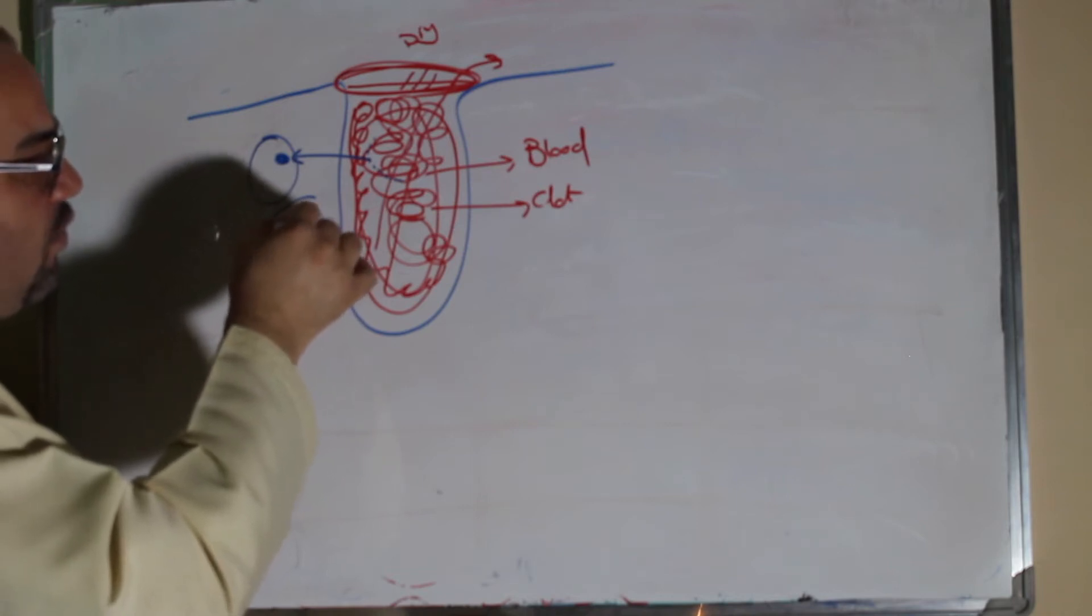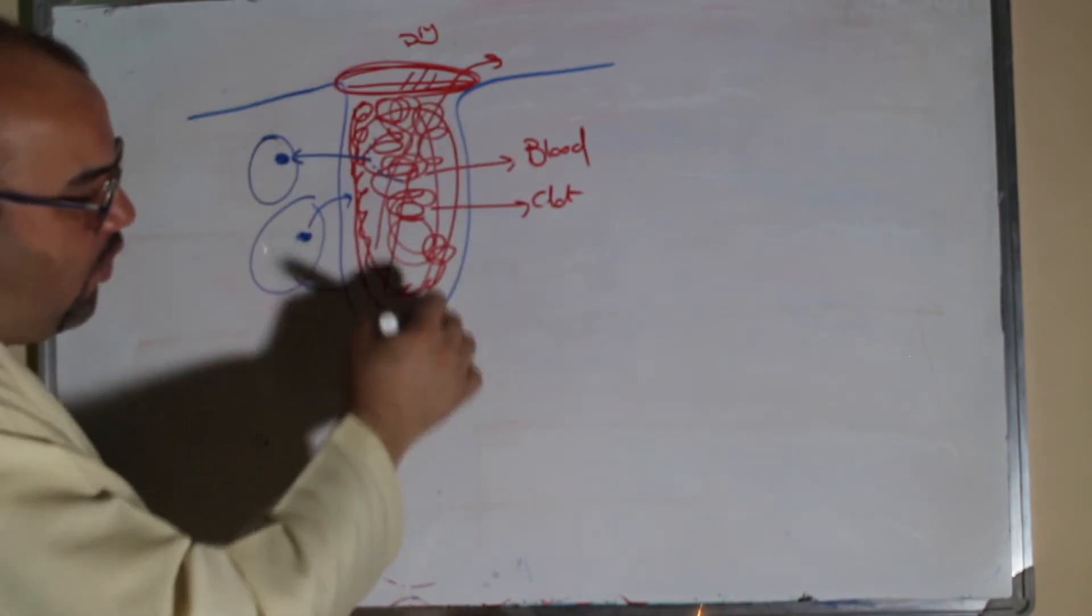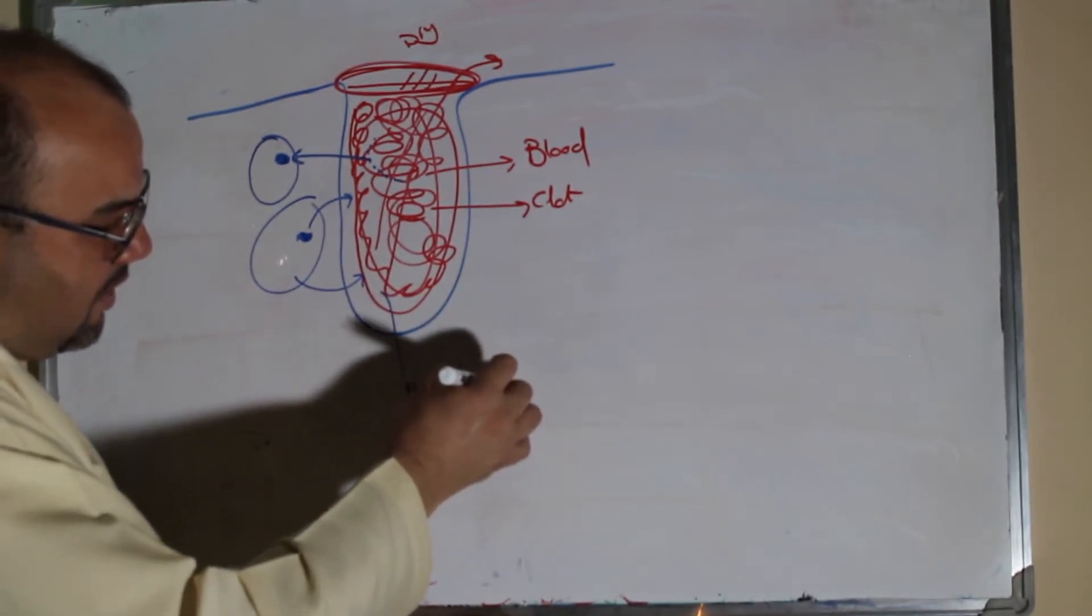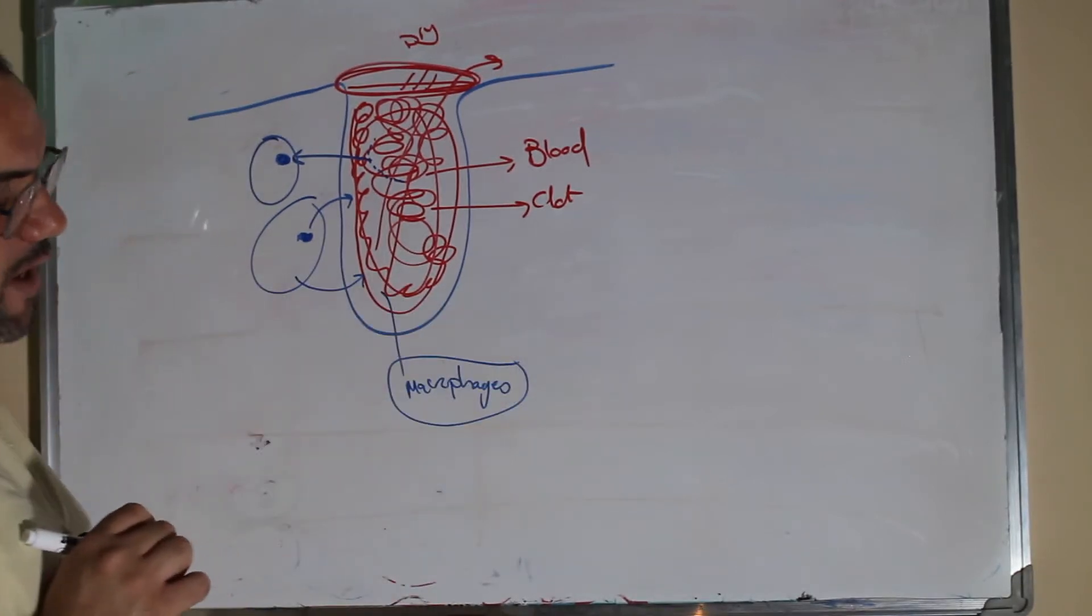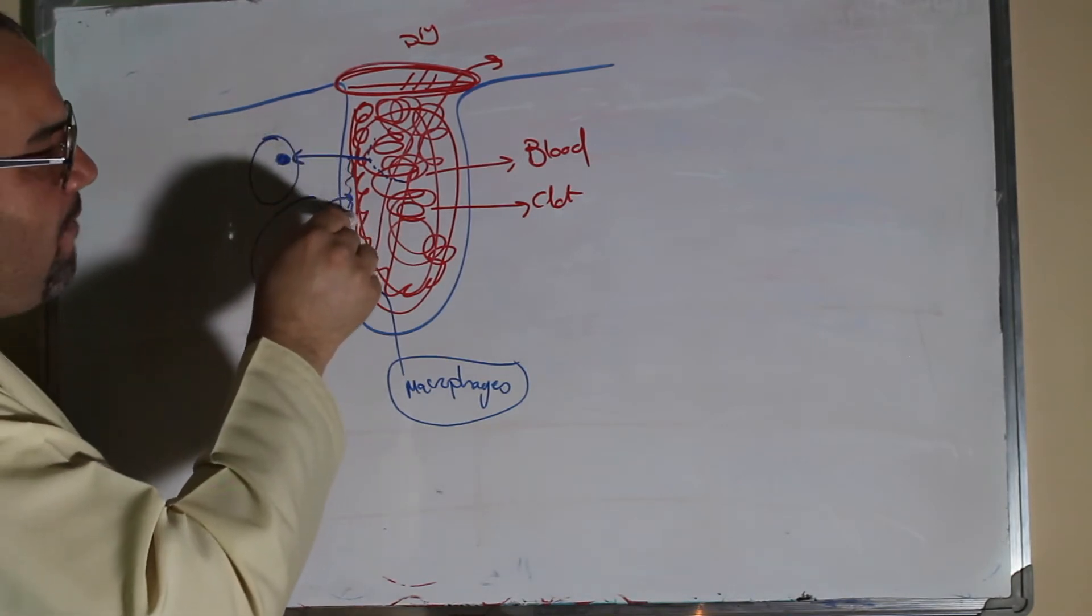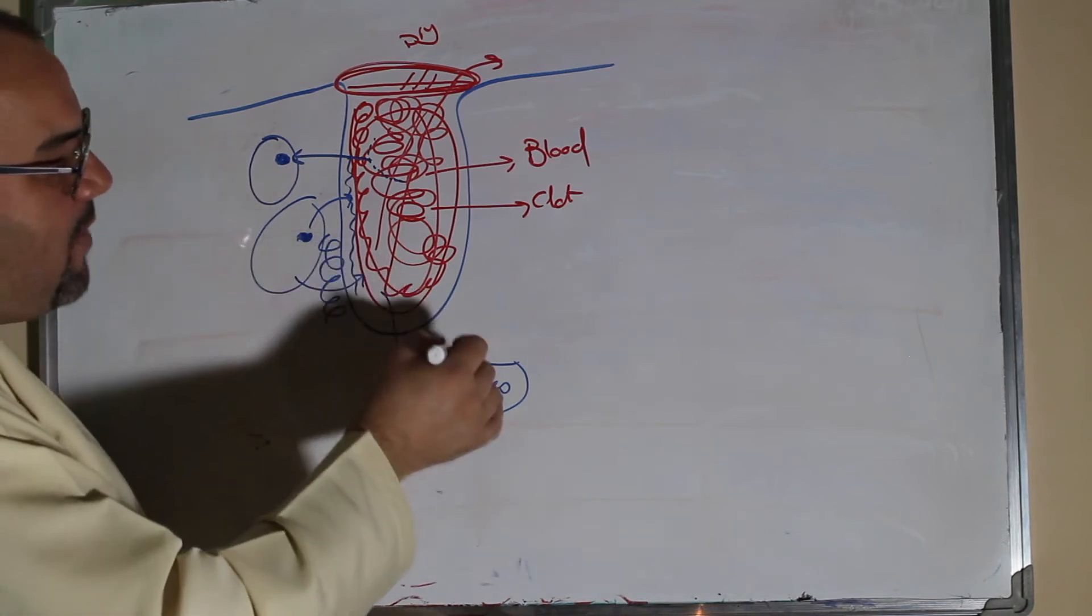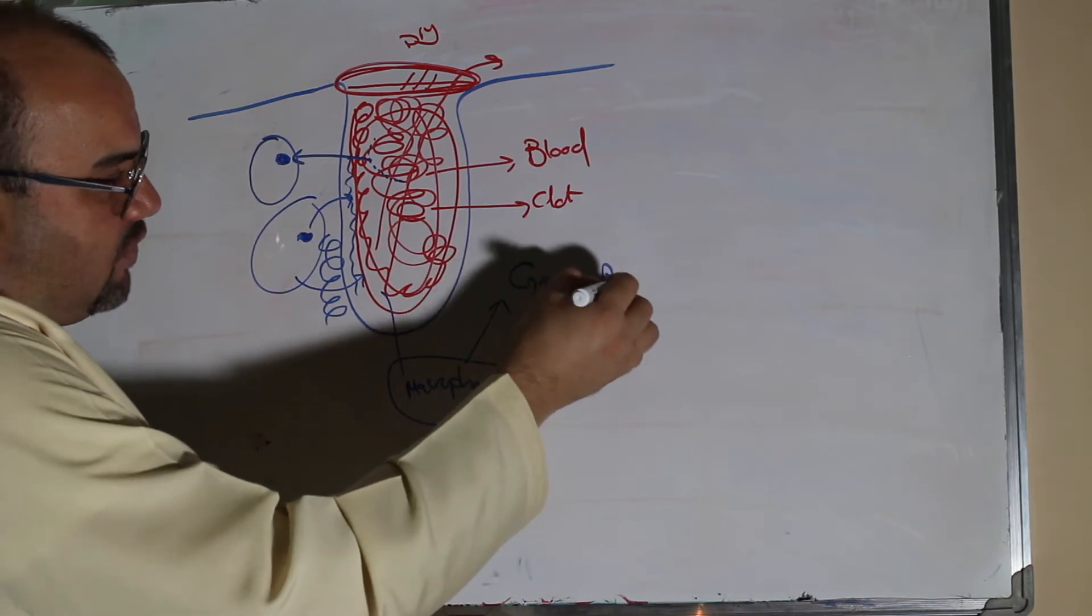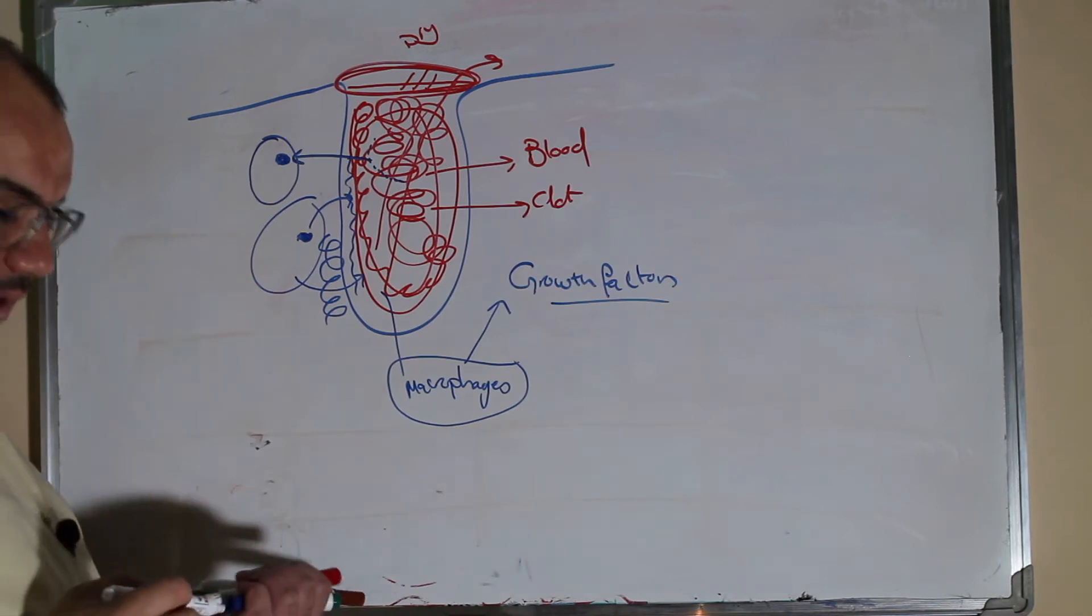The monocytes will start to go inside the wound and develop or modify into macrophages. These macrophages will start to clean up this area, accumulate here, and send some growth factors. Remember this term in describing the progress of wound healing.